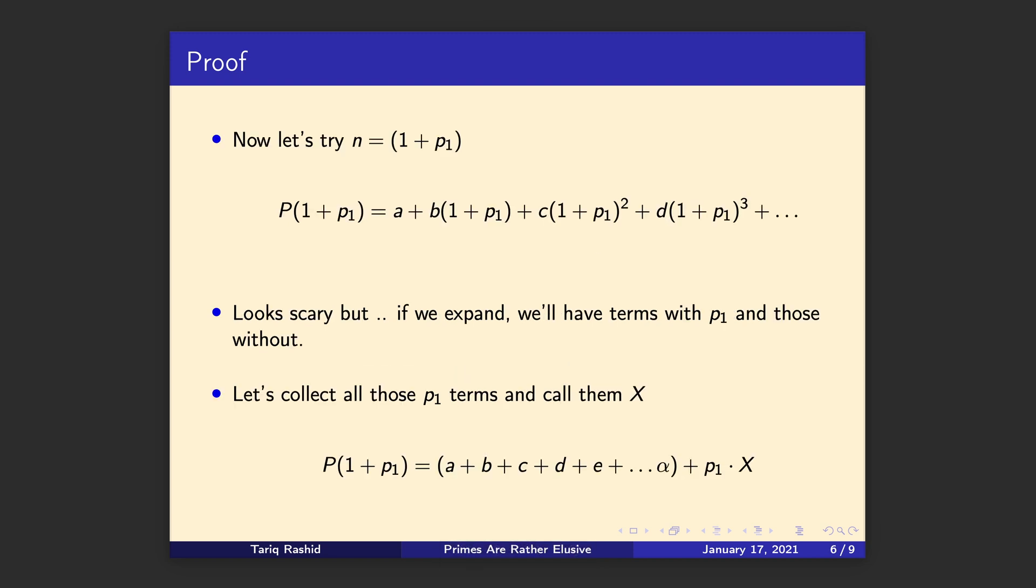Now let's try another input. This is carefully constructed, it wasn't by chance. We're going to try not an input of one or two or three, but one plus P₁. That happens to be that number we found previously. Now P(1 + P₁) is a plus b times that input, c times that input squared, d times that input cubed, and so on. That's simply plugging in that value, that parameter.